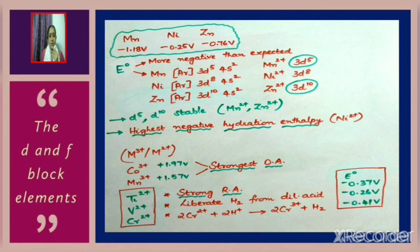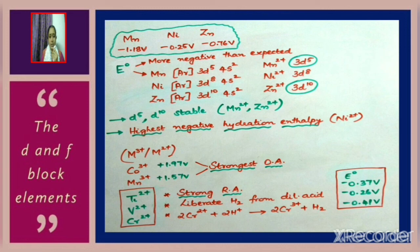Considering M³⁺/M²⁺ couples: Co³⁺ and Mn³⁺ have E⁰ values of +1.97 V and +1.57 V respectively — positive values indicating they are the strongest oxidizing agents. In contrast, Ti²⁺, V²⁺, and Cr²⁺ have negative E⁰ values, making them strong reducing agents capable of liberating hydrogen from dilute acid. For example: Cr²⁺ + 2H⁺ → Cr³⁺ + H₂.